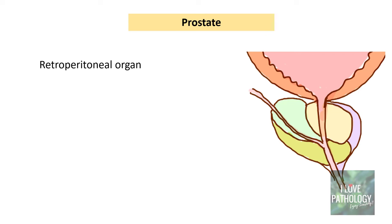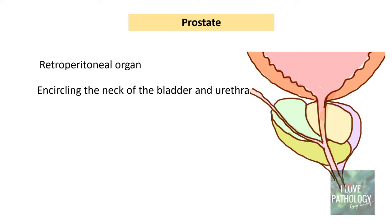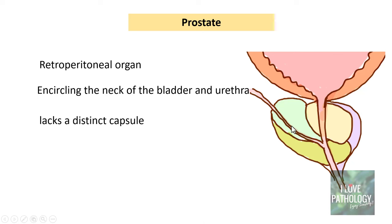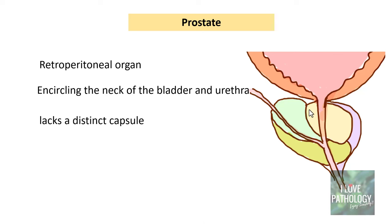The prostate, as you all know, is a retroperitoneal organ which encircles the neck of the bladder and the urethra. What you need to understand is that it lacks a distinct capsule. The weight of the prostate is approximately 20 grams in the normal adult.